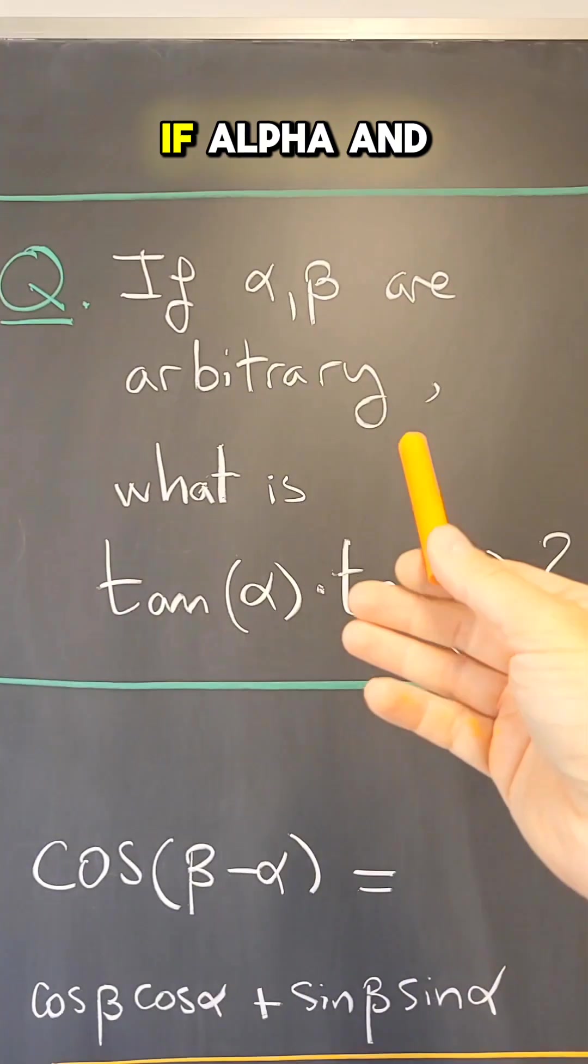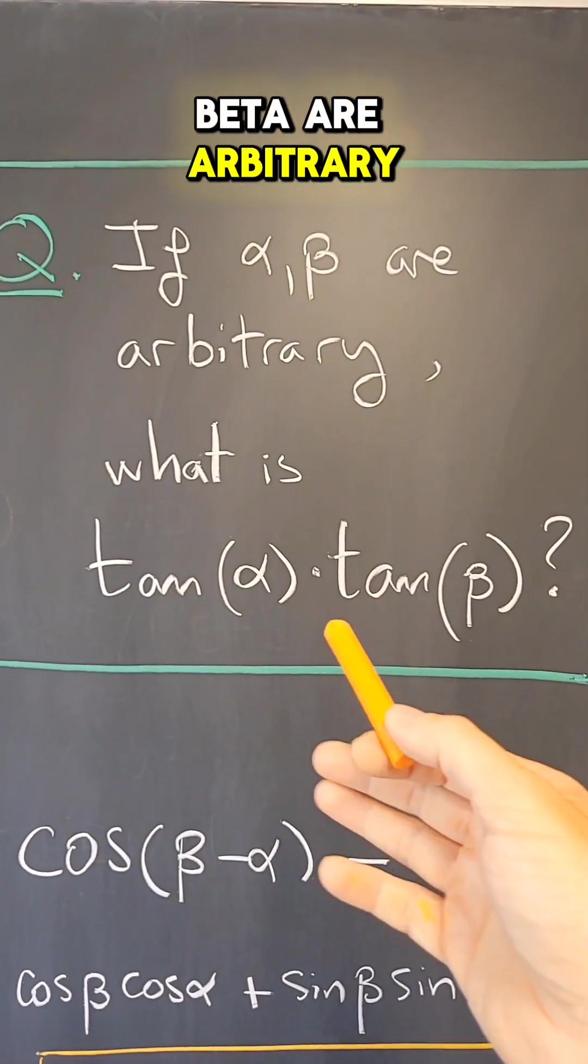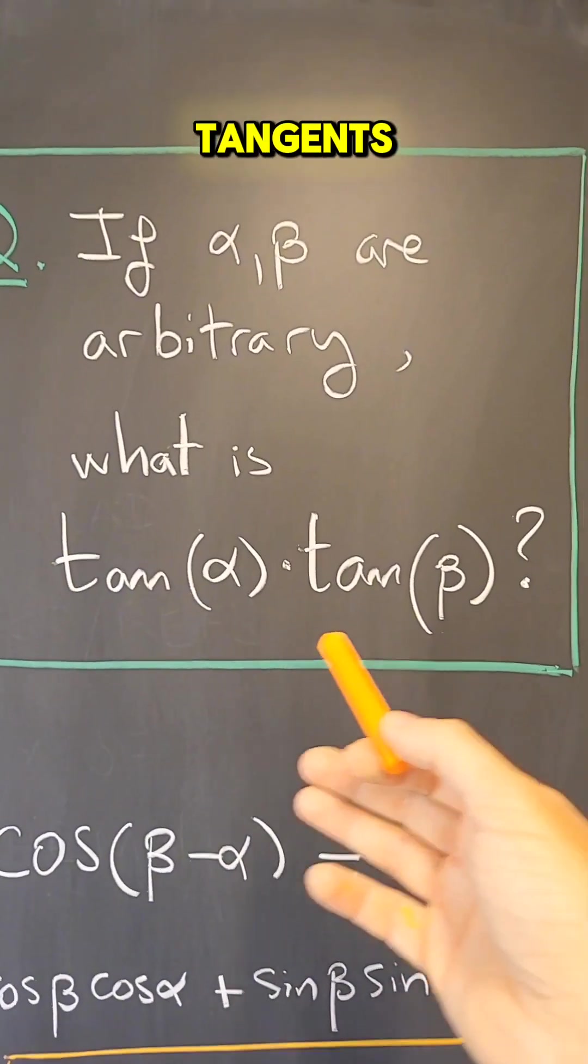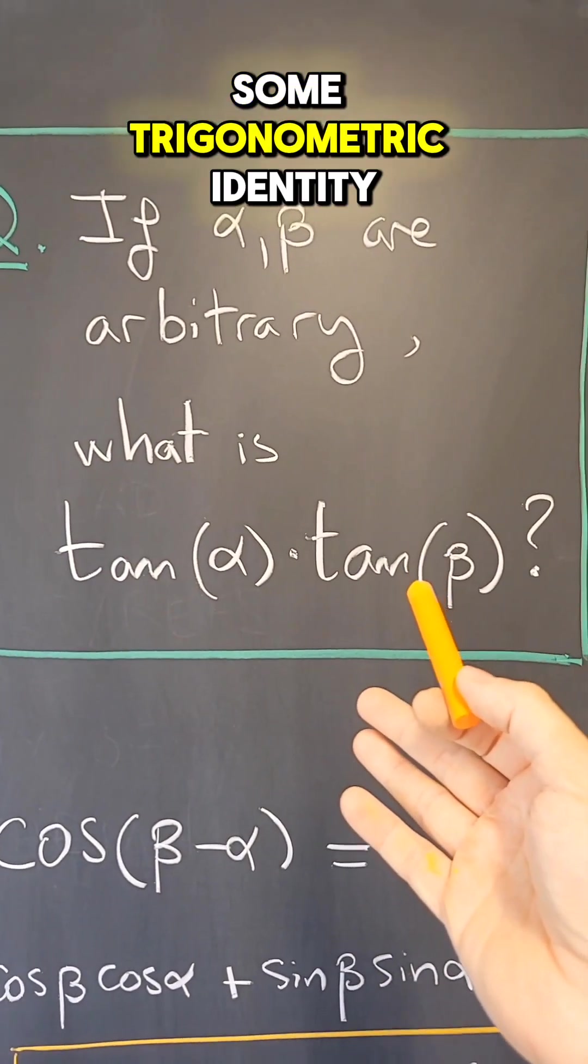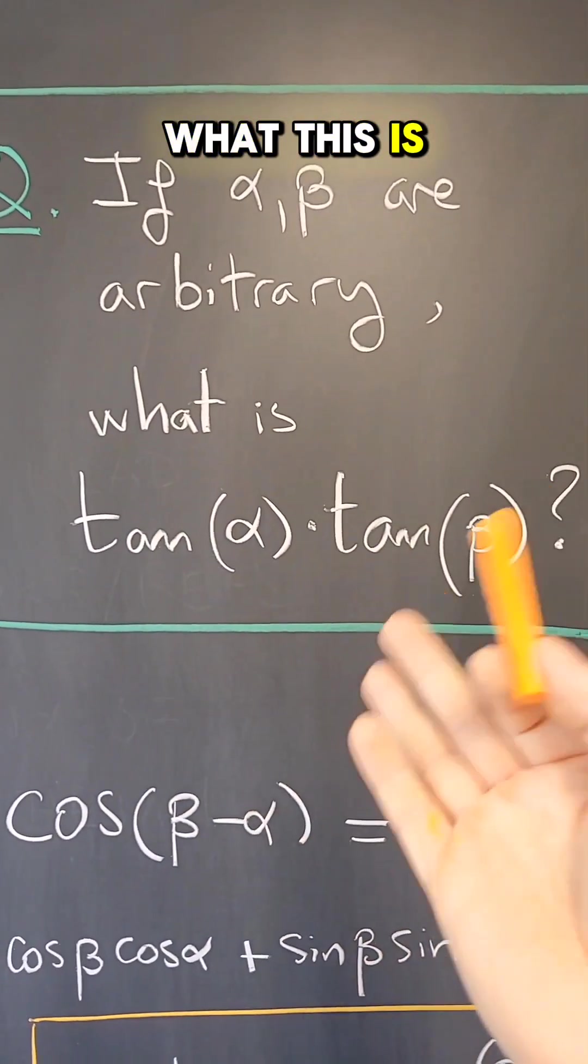More generally, if alpha and beta are arbitrary, what is the product of their tangent? So what is the product of the slopes? There must be some trigonometric identity that tells me what this is. And there is.